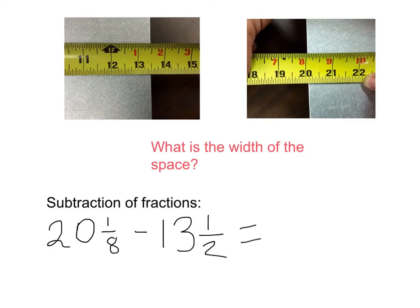In the video, he gave two measurements, 20 and 1 eighths, and 13 and a half. And in between those two measurements, there was a space. And so what we need to know is what is the width of that space, and that's actually a subtraction of fractions, and so we need to subtract 20 and 1 eighths minus 13 and a half.